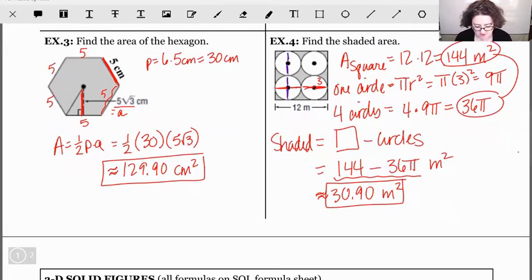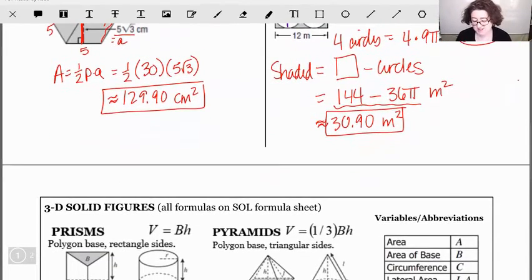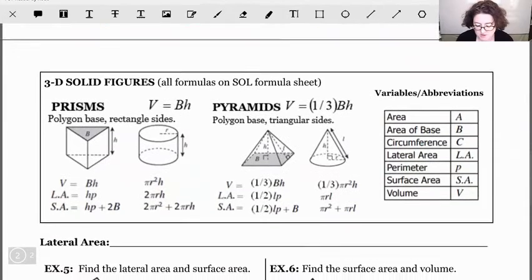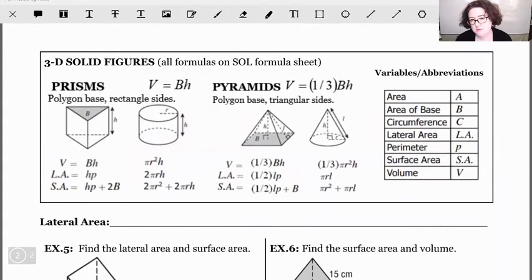Alrighty, so the next piece we need to look at for composite figures is what if we put solid pieces together. The different kinds of solids that you've seen before are pyramids and prisms pretty much.